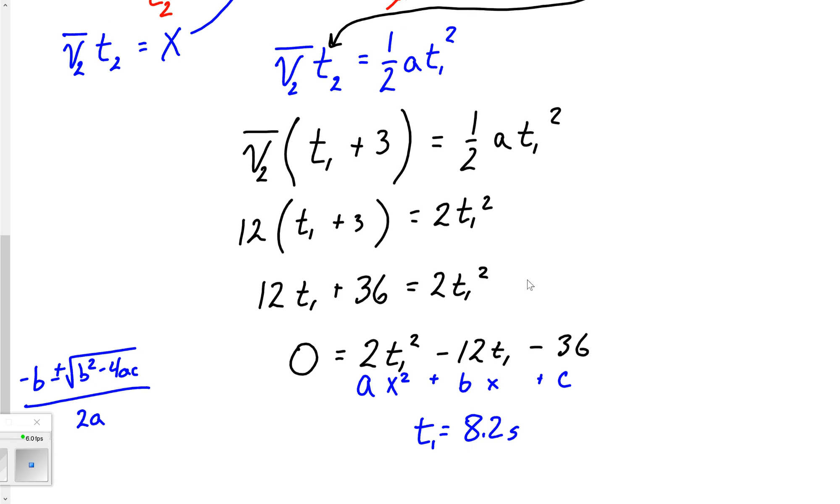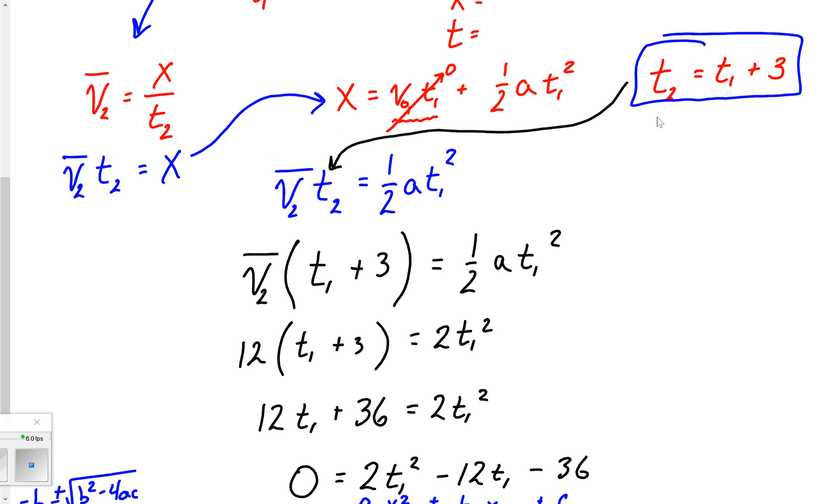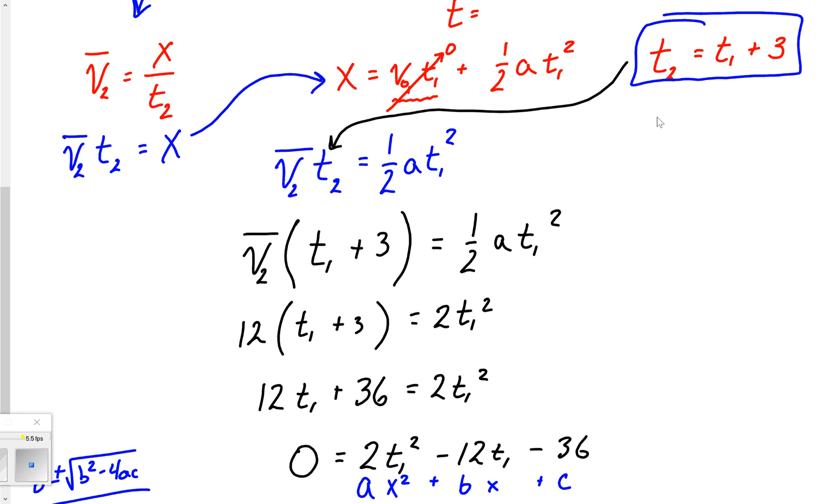That means T_2, if you remember, is actually 3 seconds more. So if this is 8.2 seconds, then that means we've got a total of 11.2 seconds over here. So there is my T_2 value.